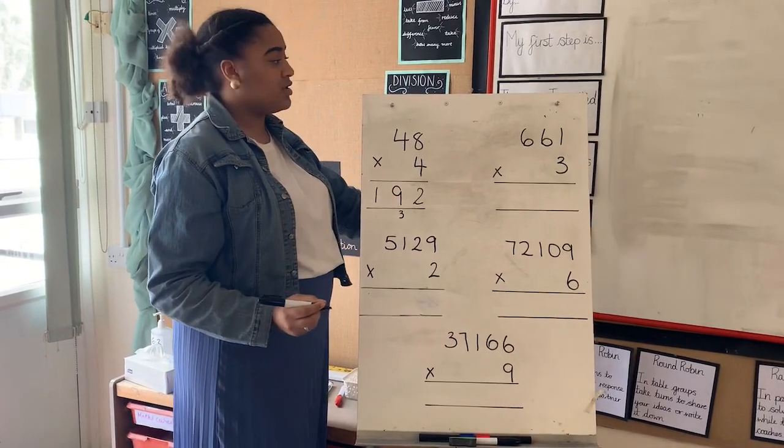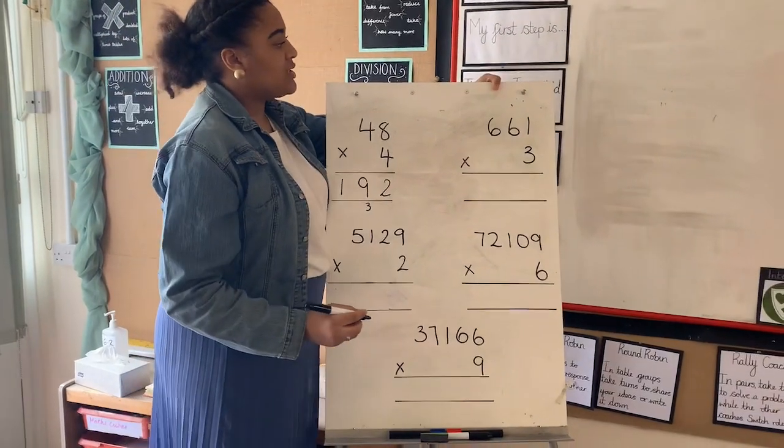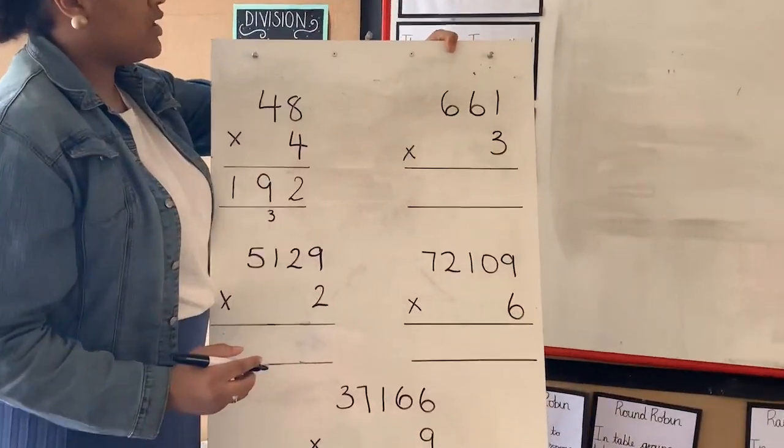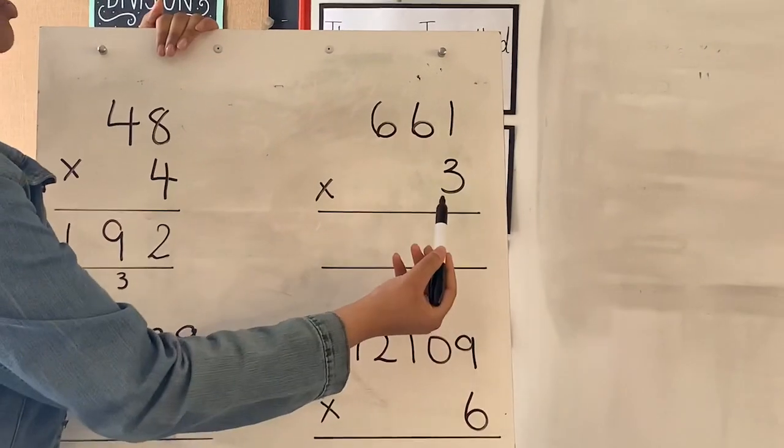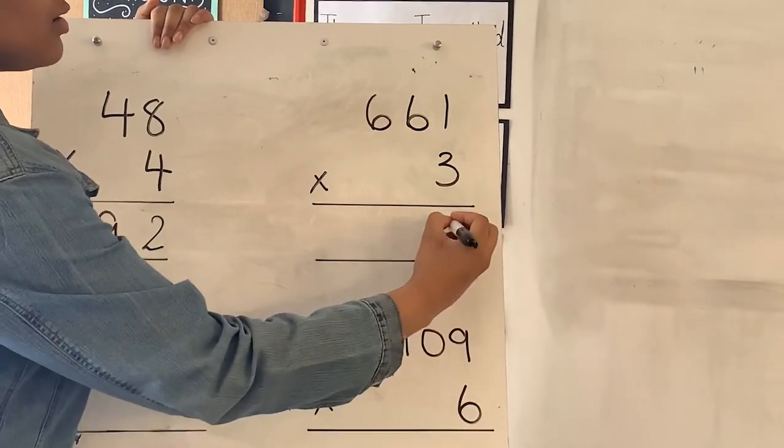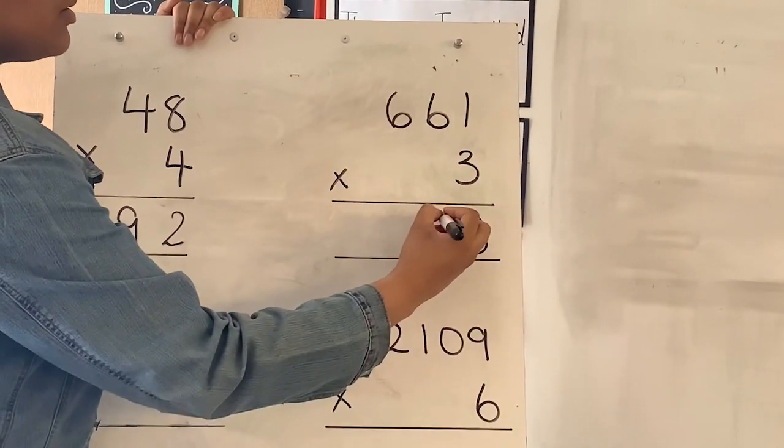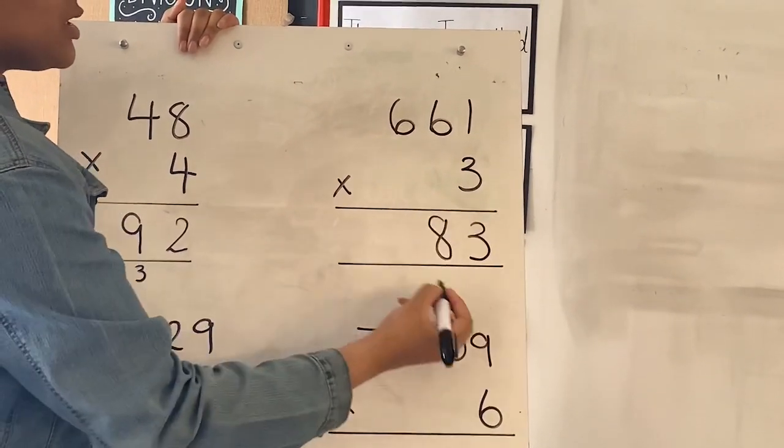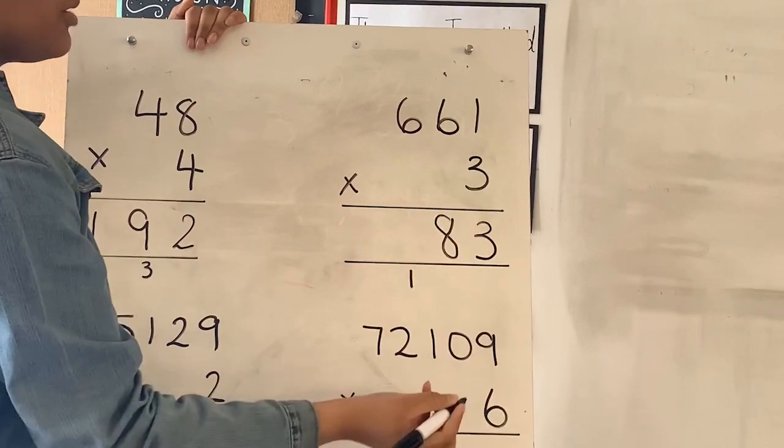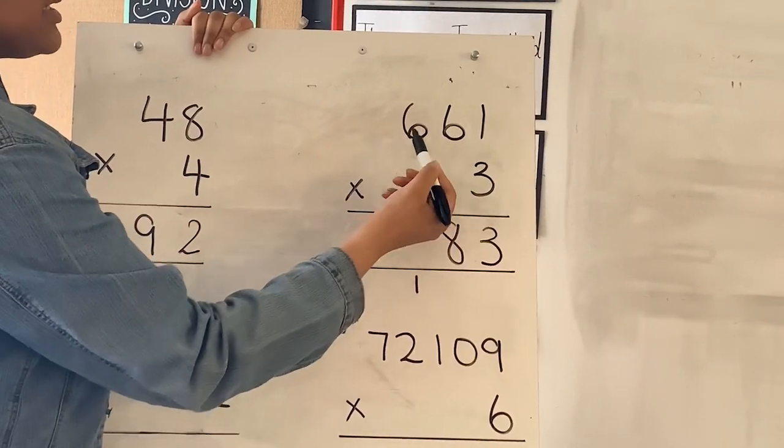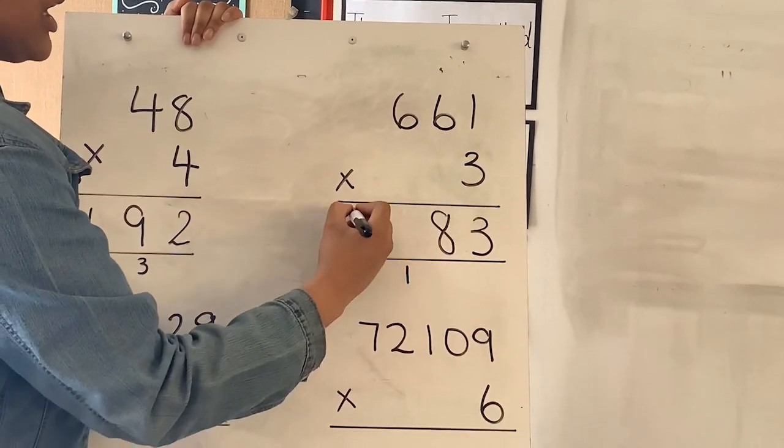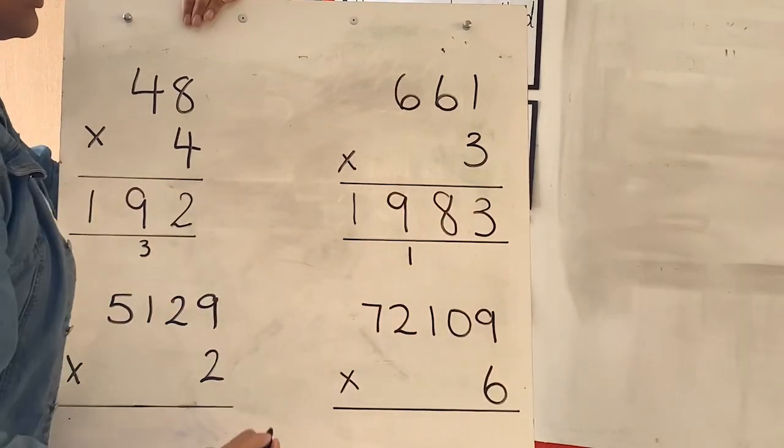Moving on to the next calculation, 661 times 3. Again starting from our ones, 3 times 1 is 3. 3 times 6 is 18, put the 8 down, we need to exchange the 1 over to the next column. And again 3 times 6 is 18, add the 1 we've exchanged which is 19, so the answer is 1983.